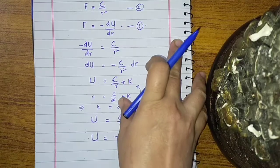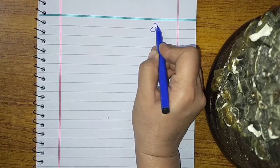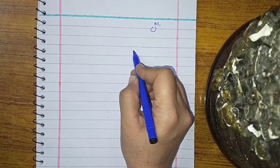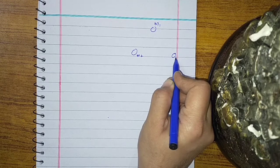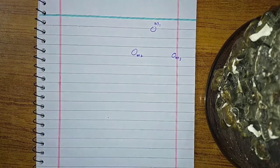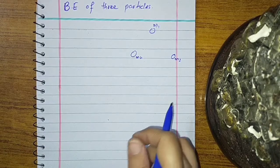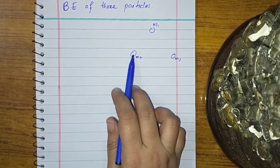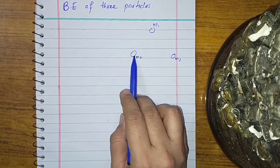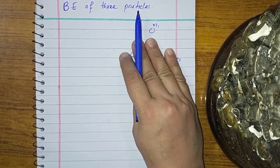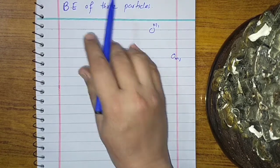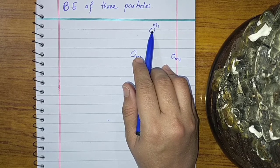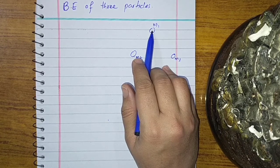Now, what will happen if we have a system of three bodies? We have three bodies: M1, M2, and M3. We are going to study the energy of a system of three particles. Initially, only M1 was present. To bring M1 from infinity to this position does not cost any potential energy, because there is no other body to attract or repel M1.